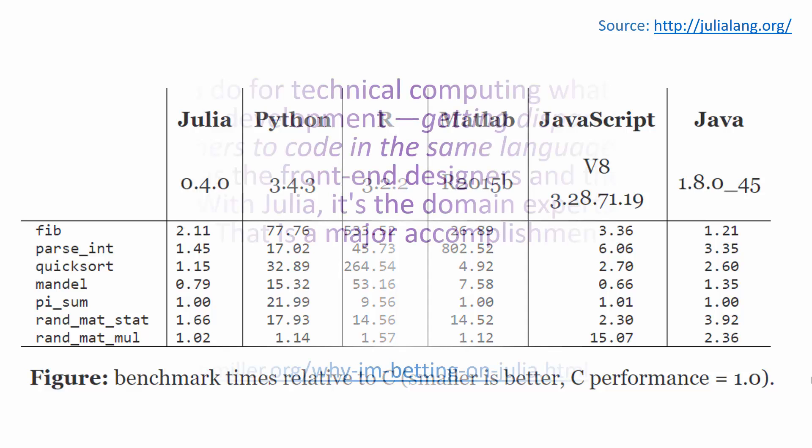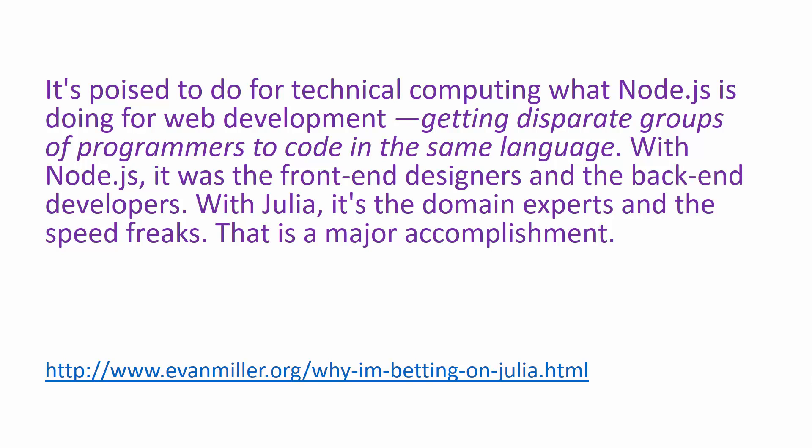Here is a quote that I took from Evan Miller's website. I like this very much. It says: it's poised to do for technical computing what Node.js is doing for web development—getting disparate groups of programmers to code in the same language. With Node.js it was the front-end designers and the back-end developers. With Julia it is the domain experts and the speed freaks. That is a major accomplishment.